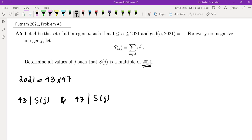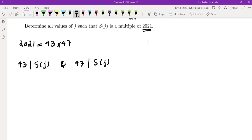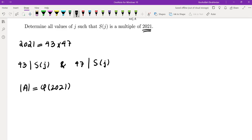Now, since we are doing all numbers that are relatively prime to 2021, we know that the size of this set is φ(2021). This is the Euler totient function, which is φ(43) times φ(47). So there are 42 times 46 numbers in this set.